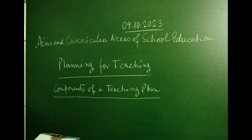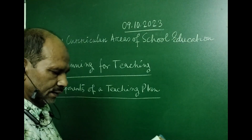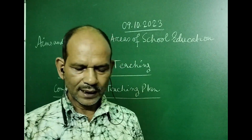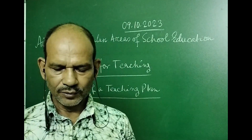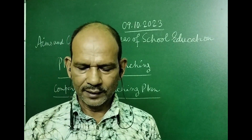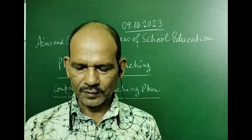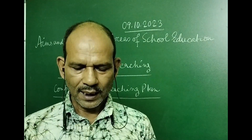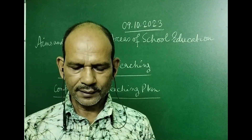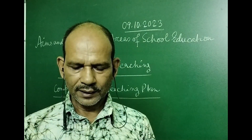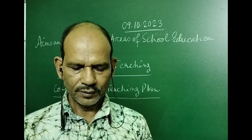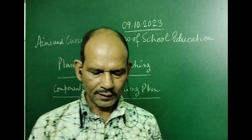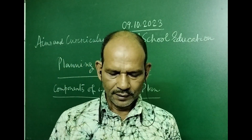Components of a teaching plan. Good planning requires understanding of curricular goals, competencies and learning outcomes to be achieved, along with prior learning of the children for whom the planning is being made, and available teaching-learning materials and content to be used.